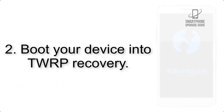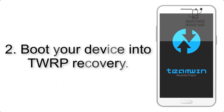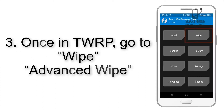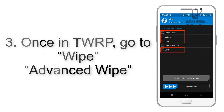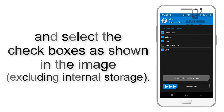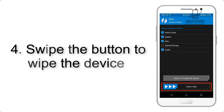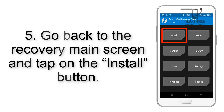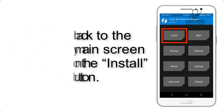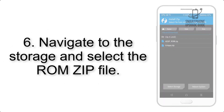Step 2: Boot your device into TWRP recovery. Once in TWRP, click on Wipe, then Advanced Wipe, and select the checkboxes as shown in the image, excluding internal storage. Step 4: Swipe the button to wipe the device. Step 5: Go back to the recovery main screen and tap on the Install button.